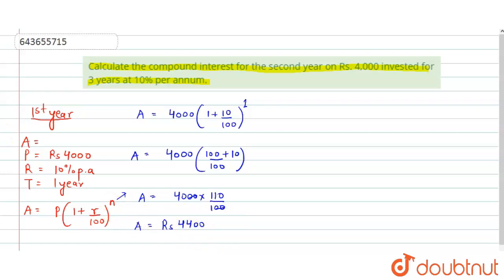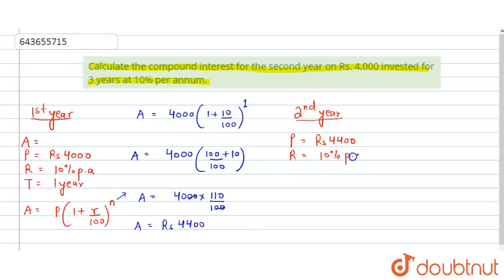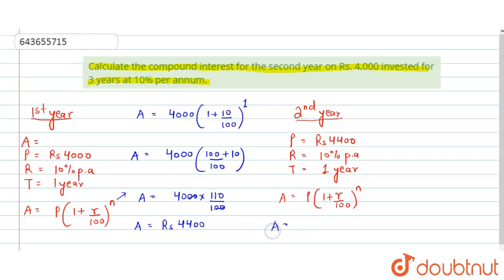This value of amount will act as the principal for the second year. In the second year, the principal is rupees 4400, the rate of interest remains the same at 10 percent per annum, and time is again one year. The amount at the end of the second year equals P into (1 + R/100) to the power N.